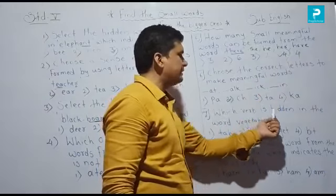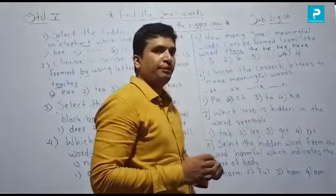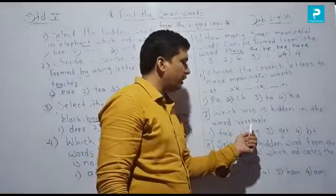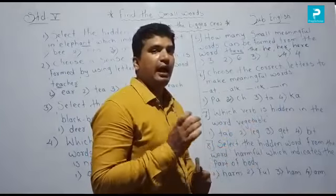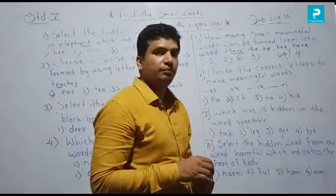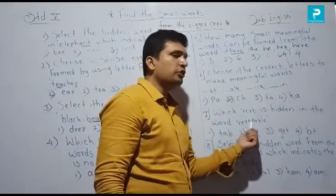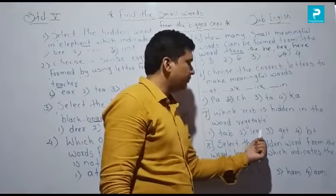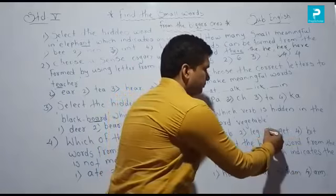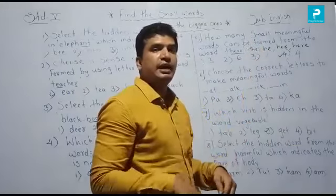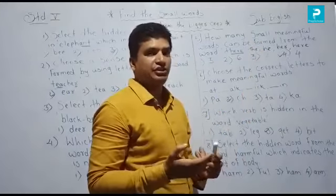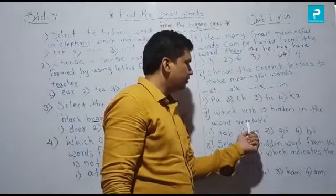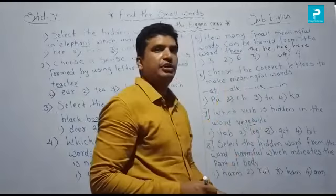Seventh: Which word is hidden in the word 'vegetable' — specifically an action word (verb)? The options are: 'tad,' 'leg,' 'gate,' and 'bit.' Which is an action word here? 'Gate' — G-E-T means to get, which is an action. So the hidden verb in 'vegetable' is 'get' (G-E-T). The word 'gate' (get) means to receive or take action. So the answer is option three, 'gate.'